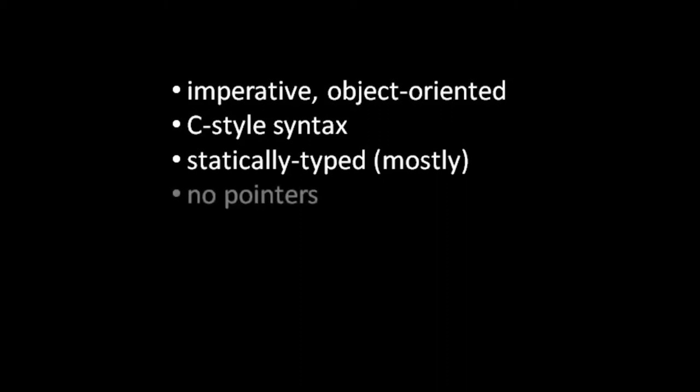Unlike C, Java doesn't have pointers. Java does have what are called references, but these are reference variables just like we saw in Pidgin — just a variable which holds the address of some object somewhere on the heap. There's no referencing or dereferencing and nothing like pointer arithmetic. Whereas C has pointers to pointers and arrays of pointers, and there's this intimate connection between arrays and pointers, there's nothing like that in Java. A reference is just a reference. You assign an object to it, and the address of that object gets stored in the reference.